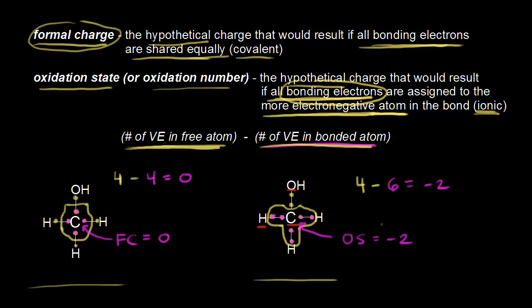So there's no sharing when you're doing oxidation states — think about the more electronegative atom and assign both electrons to it. Both formal charge and oxidation states are just extreme methods of electron bookkeeping. They're not perfect: we're assuming that electrons are either shared equally or that one atom takes both. Neither of those concepts is perfect in the real world, but it works when we're drawing dot structures and thinking about chemical reactions.